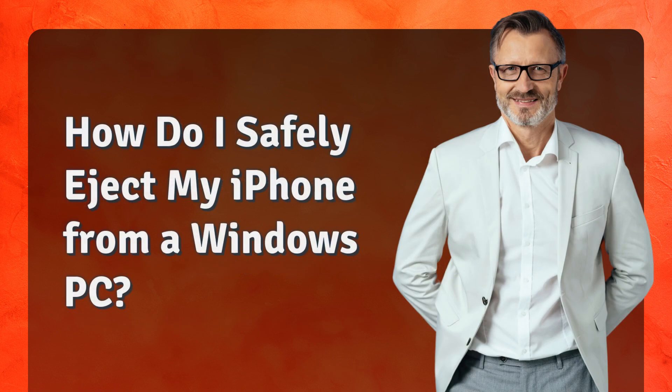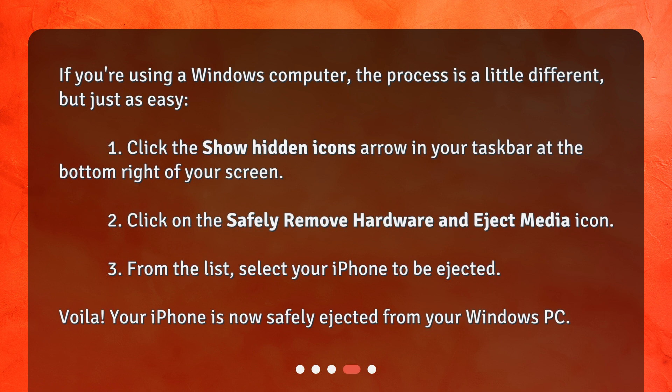If you're using a Windows computer, the process is a little different, but just as easy. 1. Click the Show Hidden Icons arrow in your taskbar at the bottom right of your screen. 2. Click on the Safely Remove Hardware and Eject Media icon. 3. From the list, select your iPhone to be ejected. Your iPhone is now safely ejected from your Windows PC.